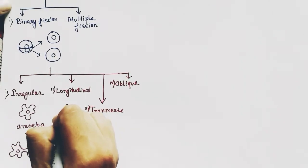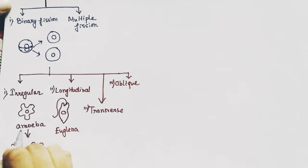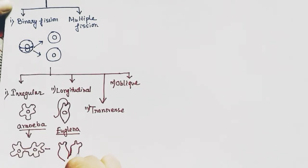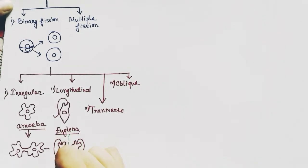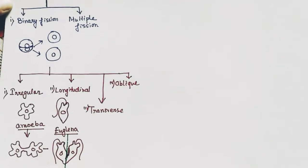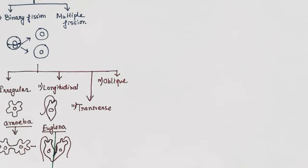In longitudinal binary fission, there is a plane or axis of division, and the plane of division goes through the longitudinal axis of the organism. Here, euglena is dividing into two parts or two new organisms through the longitudinal axis.